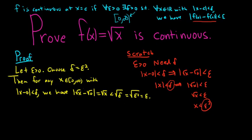So this proves that f is continuous at x equals 0. We started with an epsilon greater than 0, we chose our delta, and then for any x in this interval where the distance between x and 0 is less than delta, we showed that the distance between f of x and f of 0 was less than epsilon. That's the first proof.